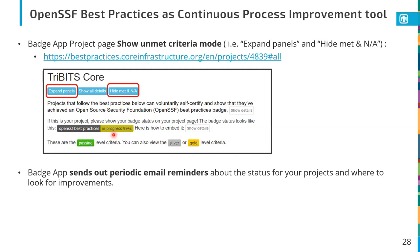Another benefit is that you can use the OpenSSF best practices site and your project entry as a way to help work on continuous improvement. On the project page in the badge app, you can show all the unmet criteria by clicking on 'expand panels' and hiding the met criteria. That will show you all the criteria you marked as unmet or didn't respond to, while hiding all the ones you've met or marked as not applicable. The badge app site will also send out periodic emails about the status of your project.